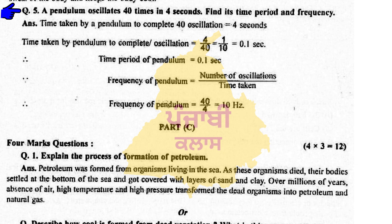Question number five: A pendulum oscillates 40 times in 4 seconds. Find its time period and frequency. Time taken by the pendulum to complete 40 oscillations is 4 seconds. Time period = 4 divided by 40 = 1/10 = 0.1 second. Frequency = number of oscillations divided by time taken = 40 divided by 4 = 10 Hz. Note this formula.